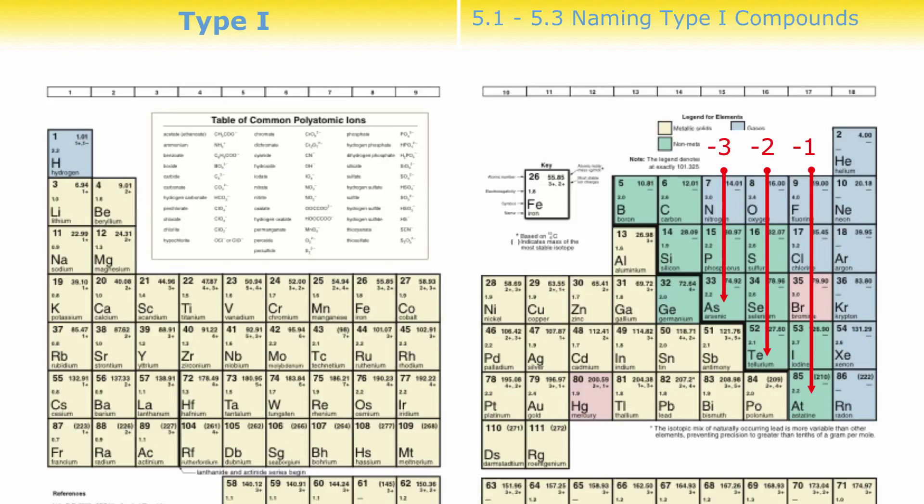Just to review, a type 1 compound is a compound made using any metal that only has one charge, like calcium or magnesium. It wouldn't be something like cobalt or iron because they have two charges. But any metal with one charge and a non-metal, those are type 1 compounds.